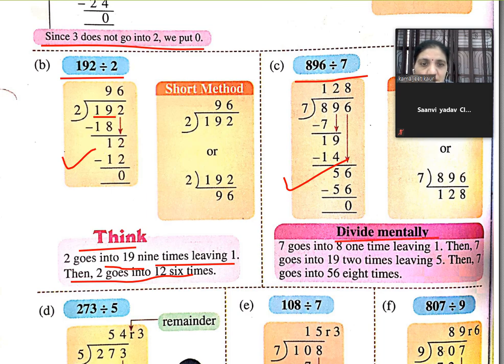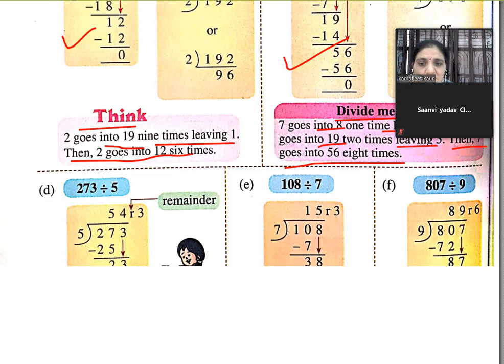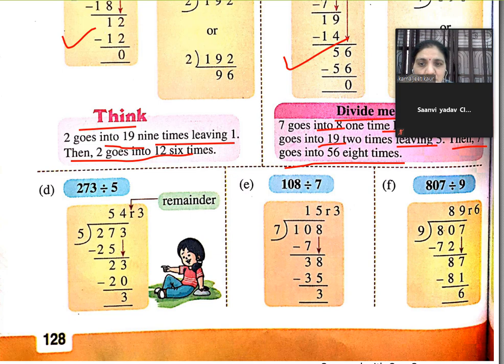Divide mentally. 7 goes into 8 one time leaving 1. Then 7 goes into 19 two times. 7 2s are 14, how much is left? 5. Then 7 goes into 56 eight times. R is used for remainder.